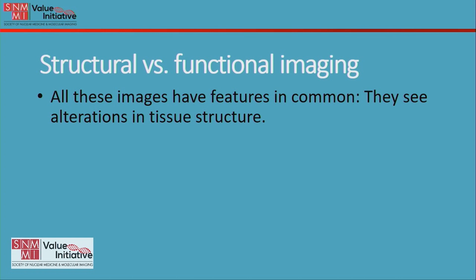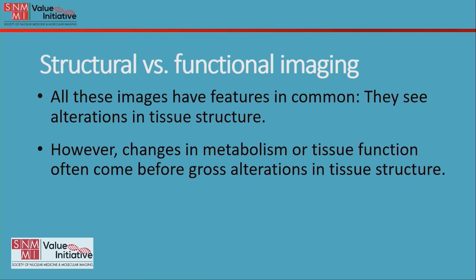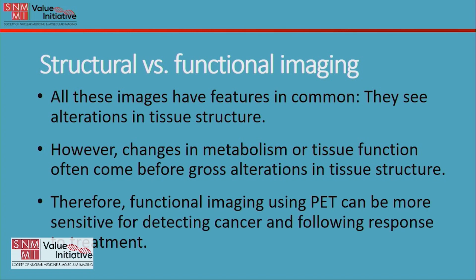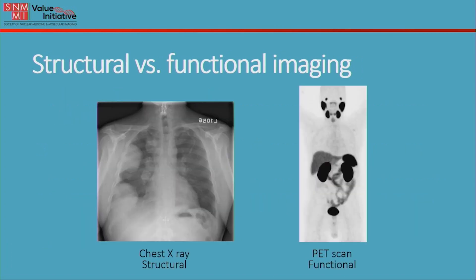All of these methods have something in common: they see alterations in tissue structure. However, in some cases, changes in metabolism or tissue function actually come before gross alterations in tissue structure. Therefore, functional imaging using methods such as PET — positron emission tomography — can be more sensitive for detecting cancer and following response to treatment.